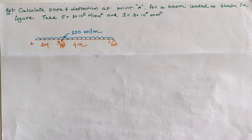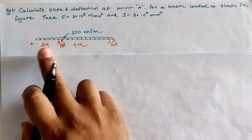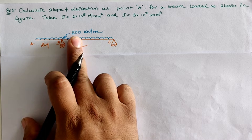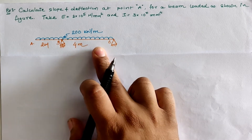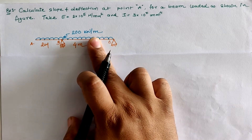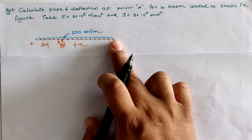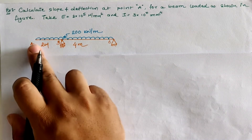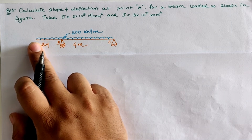Observing the figure, we have an overhang span A to B which is loaded with 200 kN/m UDL, and a simply supported span of 4 meters also loaded at 200 kN/m UDL — meaning it is loaded at 200 kN/m overall. We have to calculate slope and deflection at point A using Macaulay's method.